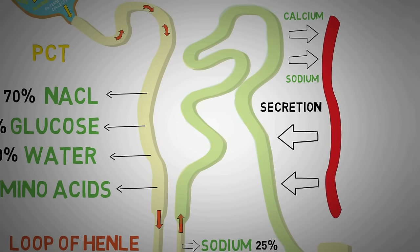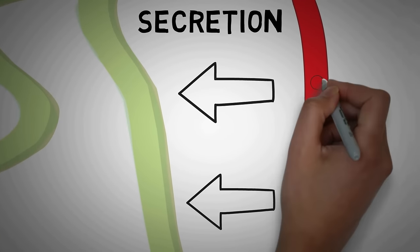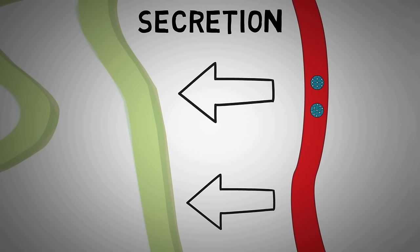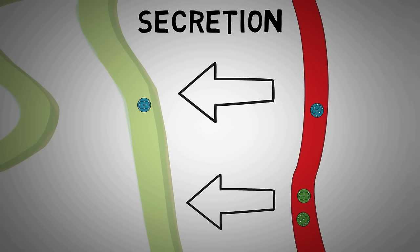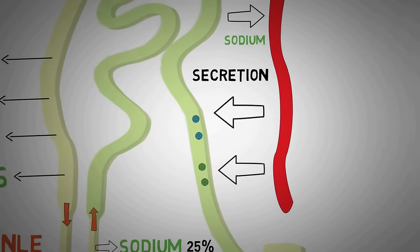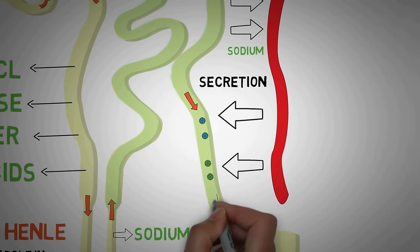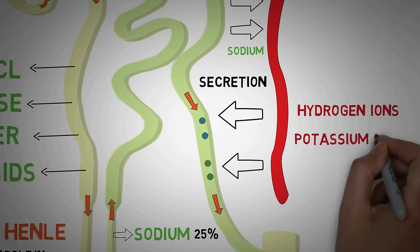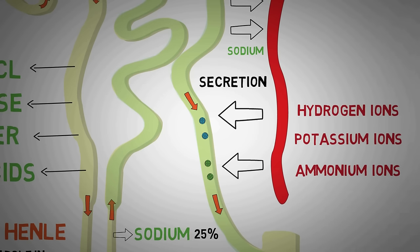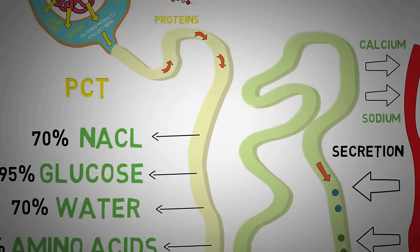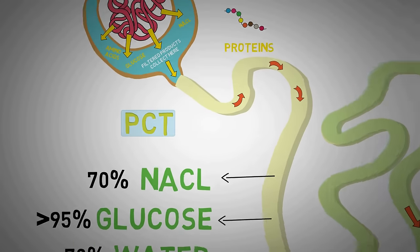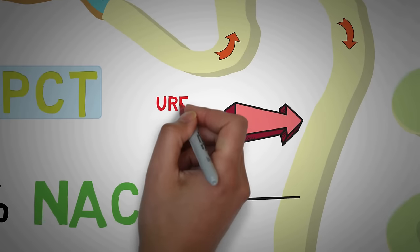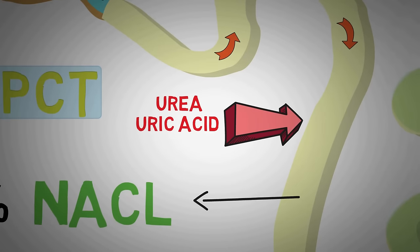In secretion, waste ions and hydrogen ions pass from the capillaries into the renal tubule. This is the final step in urine formation, during which walls of the tubule actively remove waste substances harmful to the body that escaped filtration. The secreted ions combine with the remaining filtrate to become urine. Major substances secreted into the distal convoluted tubule include hydrogen ions, potassium ions, and ammonium ions. Secretion also takes place in the proximal convoluted tubule, where substances like urea, uric acid, creatinine, ammonium ions, and some drugs are secreted.